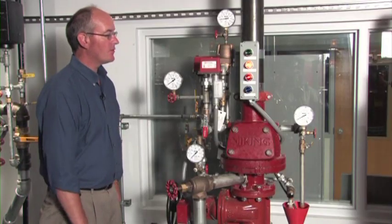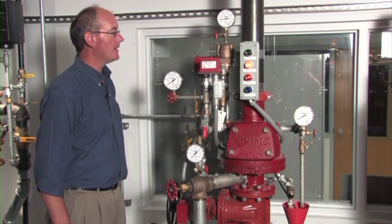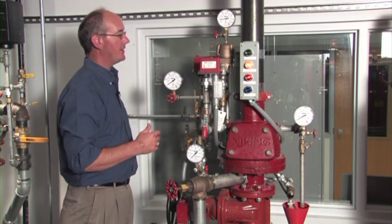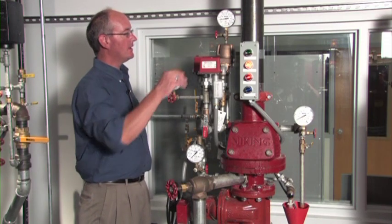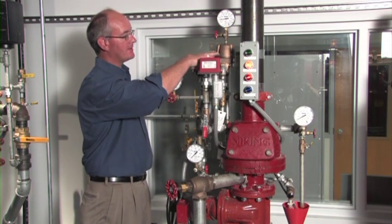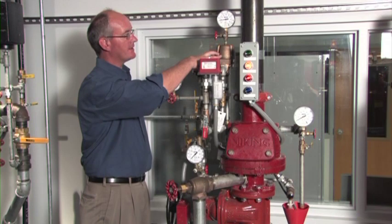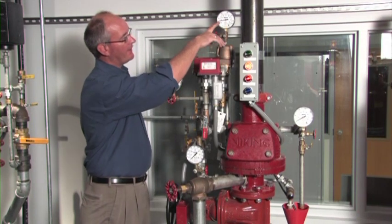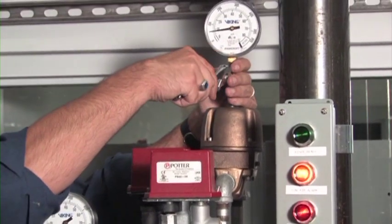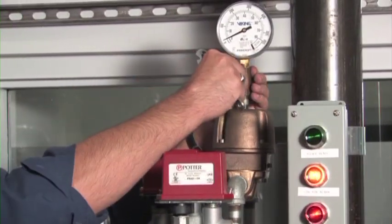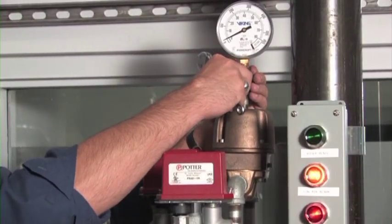If your dry system is equipped with a quick opening device, the quick opening device has to have all the air removed from it prior to bringing air into the sprinkler system. The quick opening device on this valve riser is called an accelerator. You'll see that we have gauge pressure. The way to remove the pressure from the accelerator is by removing the plug. Once the air is removed, you can reinstall the plug.